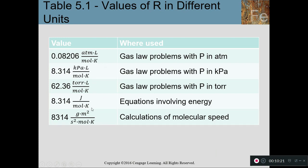Your textbook shows all the different R constants. The one I suggest memorizing most is 8.314. The value 0.0821 (or 0.8206) is used when pressure is in atmospheres. Torr is the same as millimeters of mercury — I typically just convert back to kPa. When we use energy later in the chapter, 8.314 has units of joules. For now, the two numbers to memorize are 8.314 and 0.0821.